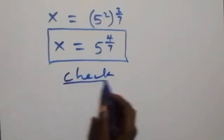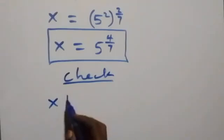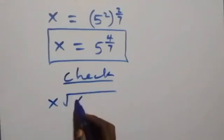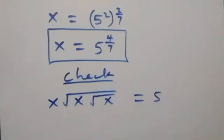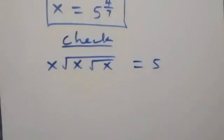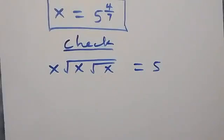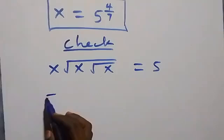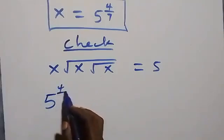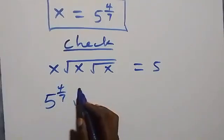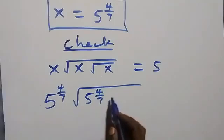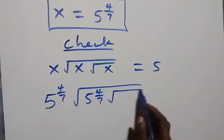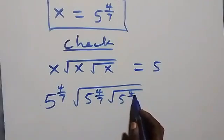Let's check whether this satisfies the given problem. We have x times root x times root x equals 5. When we substitute x equals 5 raised to power 4 over 7, this becomes 5 raised to power 4 over 7, times the square root of 5 raised to power 4 over 7, then inside another square root of 5 raised to power 4 over 7. Should this equal 5?